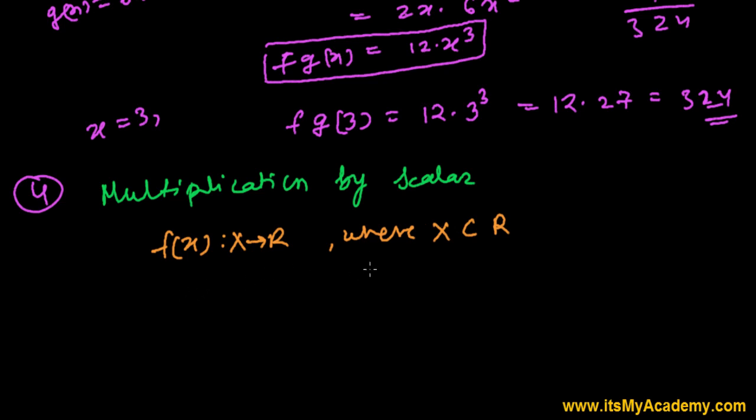In this case, let's say alpha is some scalar quantity. A scalar quantity means a real number.